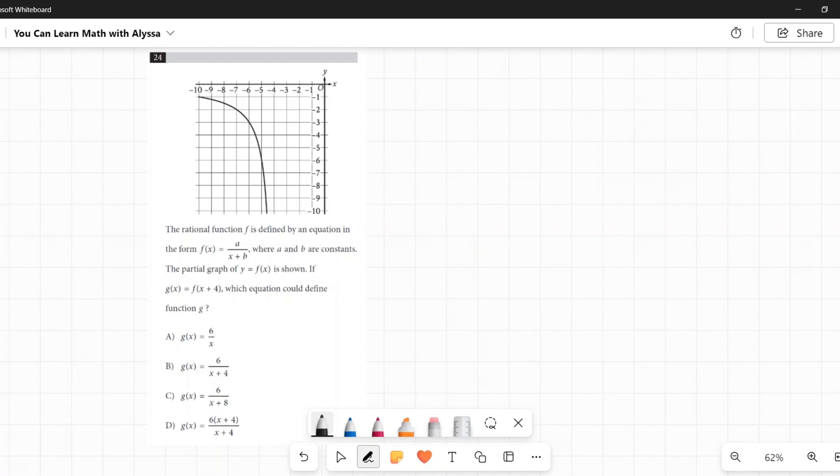The rational function f is defined by an equation in the form f of x equals a over x plus b, where a and b are constants. The partial graph of y equals f of x is shown. If g of x equals f of x plus 4, which equation could define the function g? We need to figure out what a and b are. Why do I know we need to figure this out? Because down here in our answers, there are no a's or b's. It's just numbers.